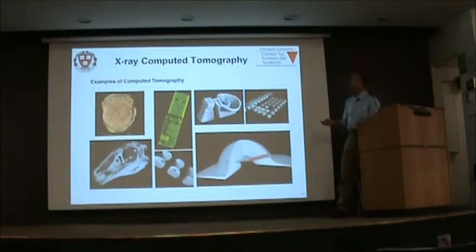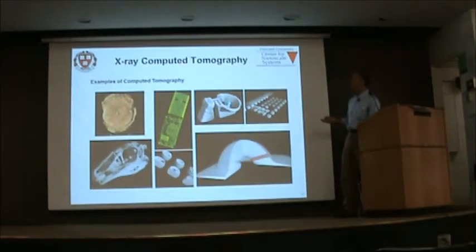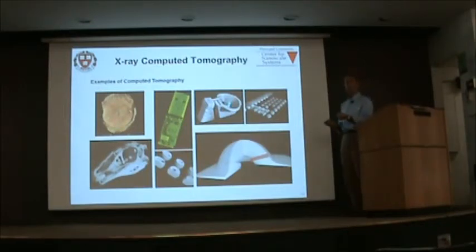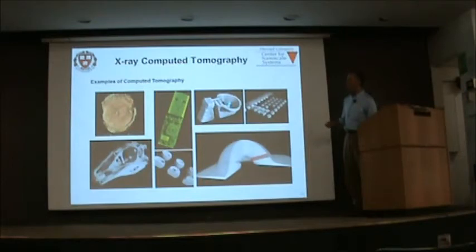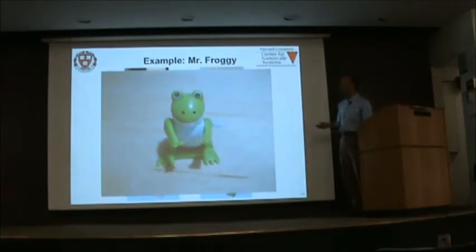Let's look at some applications. Industrial examples include a USB memory stick, an LED with the silicon part false-colored, solder joints, a diesel engine injector head, and samples showing voids in solder joints. There are also fossil samples and archaeological samples.